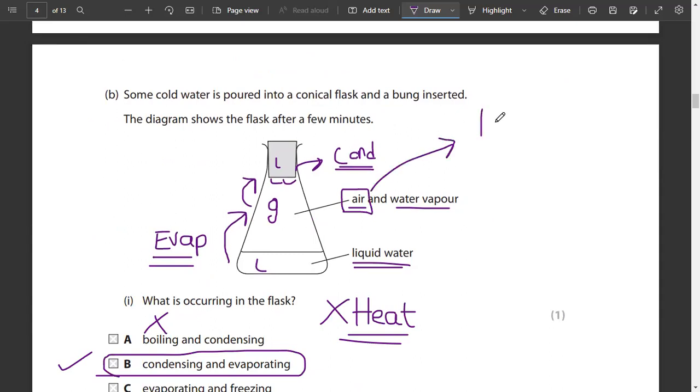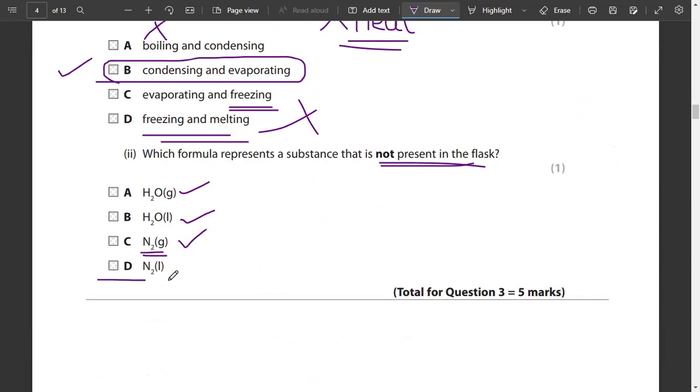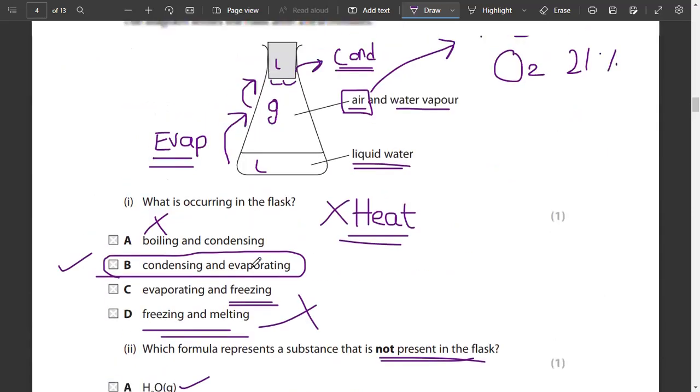What is air? Air is basically 78% nitrogen, 21% oxygen. The nitrogen gas is present, but liquid nitrogen is absent. I cannot see liquid nitrogen in the flask. So this would be your correct option.